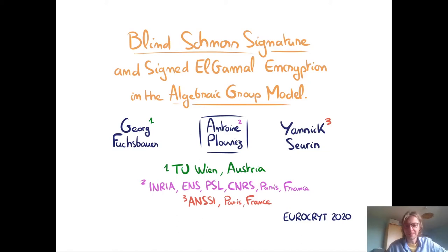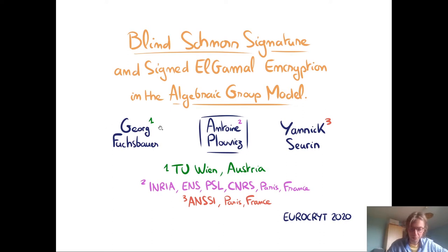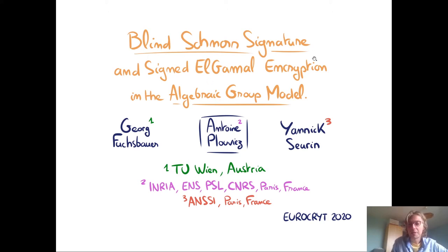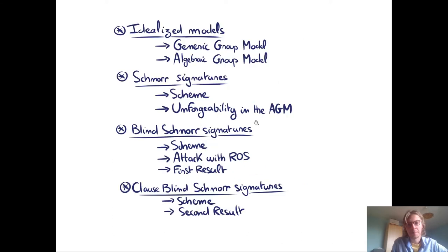Hello, everyone. This is a talk on Blind Schnorr signatures and signed ElGamal encryption in the algebraic group model. I'm Antoine Plouvier, and this is joint work with Georg Fuchsbauer and Yannick Seurat. In this work, I will focus on the Blind Schnorr part of the paper and the algebraic group model.